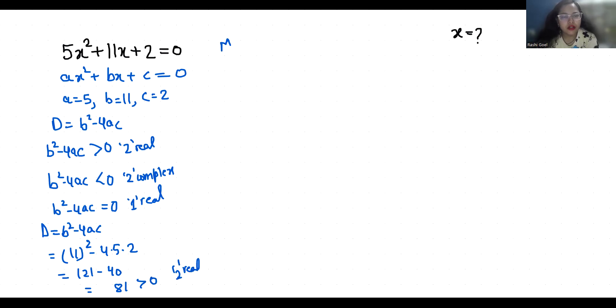So method one: 5x² + 11x + 2 = 0. I am going to solve with the quadratic formula: x = (-b ± √(b² - 4ac)) / 2a. So x = (-11 ± √81) / (2 × 5). We can write √81 as 9, so x = (-11 ± 9) / 10.